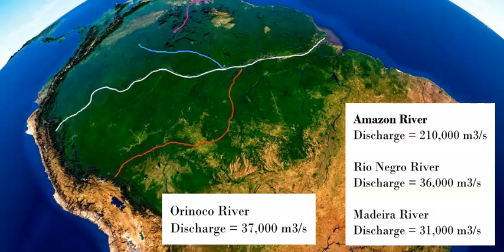The other two large rivers — the Rio Negro and the Madeira — both flow within the Amazon basin and join the Amazon at confluences, shown as the blue and red lines on the map respectively. The Madeira has a discharge of 31,000 cubic meters per second and the Rio Negro has around 36,000. Both flow into the Amazon, giving the Amazon a total discharge of a whopping 210,000 cubic meters per second — cumulatively nearly as much as all the other nine rivers combined. It's an enormous amount of rainfall running off into the river and flowing through to the Atlantic Ocean.